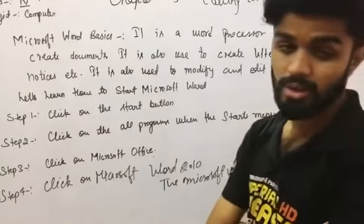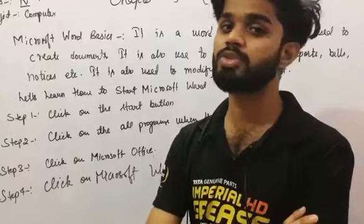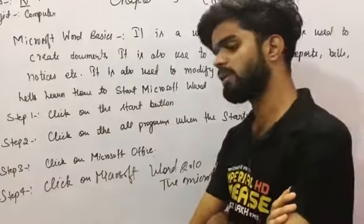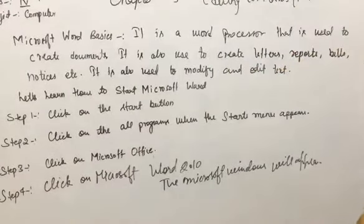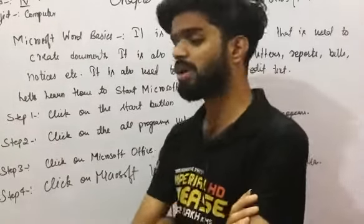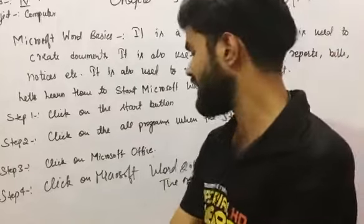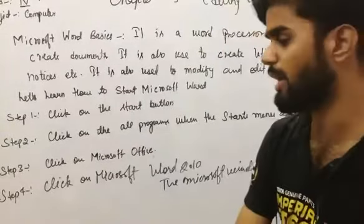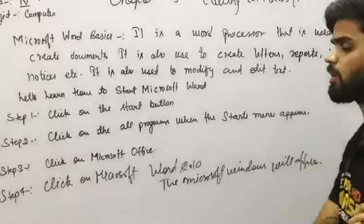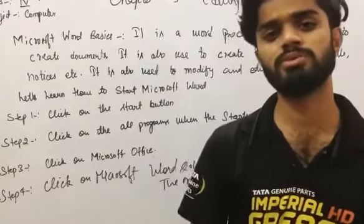Under that menu, we need to click on Microsoft Office. After clicking on Microsoft Office, we have another option: Microsoft Word 2010. We need to click on that option, and we see that a Microsoft Word window will appear on our computer screen.